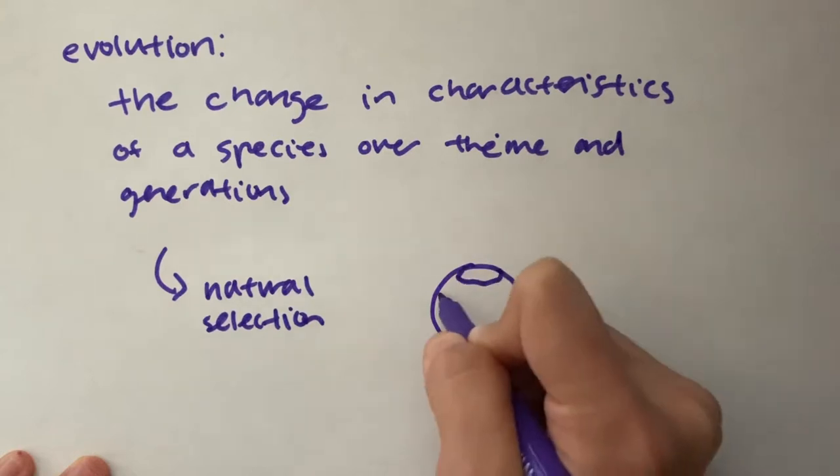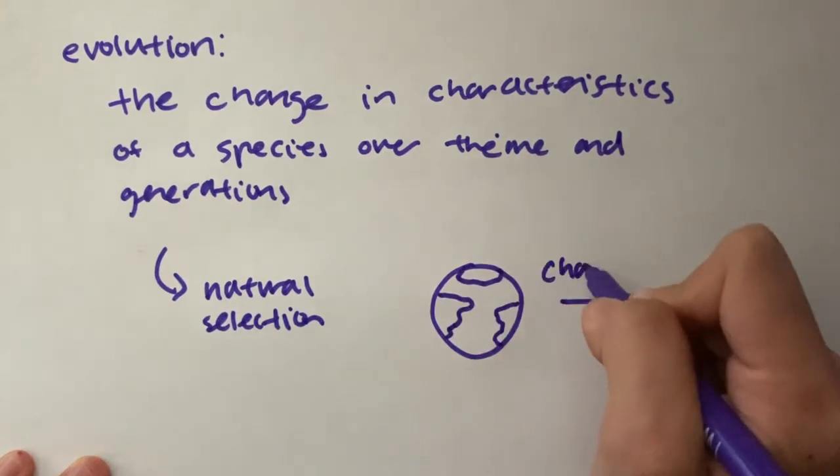The theory is based on the idea that all species are related and gradually change over time. Evolution is very complex and there is still a lot we don't know, but today we are going to learn about some of the causes of evolution through three activities.